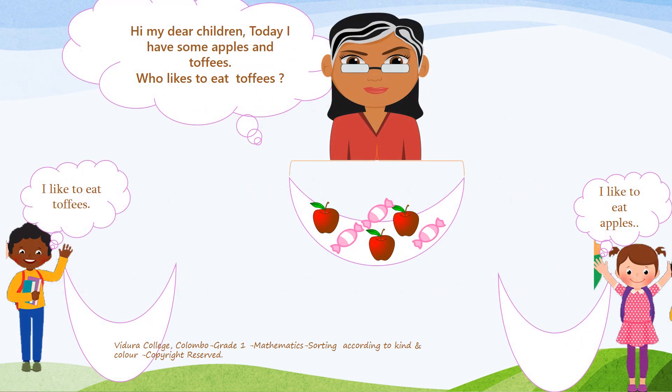Let's start the lesson. Children, look at these pictures. This young lady has some toffees and apples, and she needs to find out who would like to eat them most. The boy said, 'I like to eat toffees,' and the girl said, 'I like to eat apples.' Now we have both of them but mixed up, so shall we arrange them according to their preference?